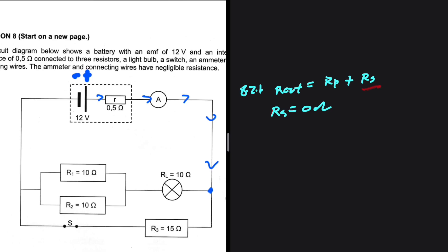But at this point, the current splits. A proportion of the current goes down this path while the other proportion of the current goes down this path. So the total resistance on this path is in parallel with the total resistance on this path.